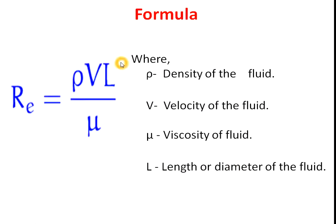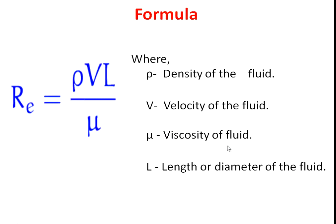The formula to calculate the Reynolds number is: Re = (rho × V × L) / mu, where rho is the density of the fluid, V is the velocity of the fluid, L is the length or diameter of the pipe, and mu is the viscosity of the fluid.